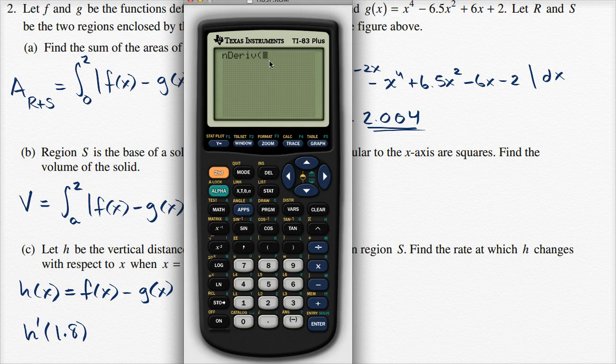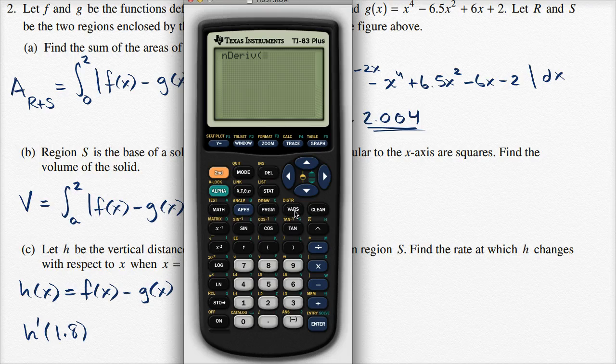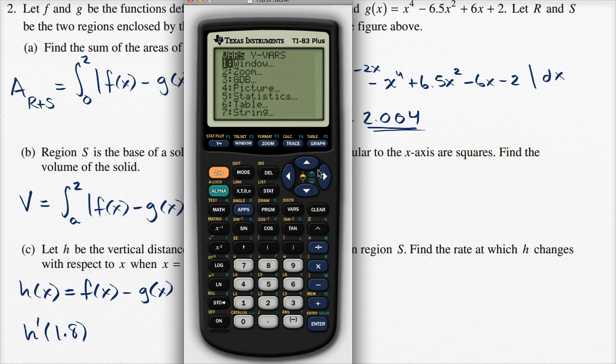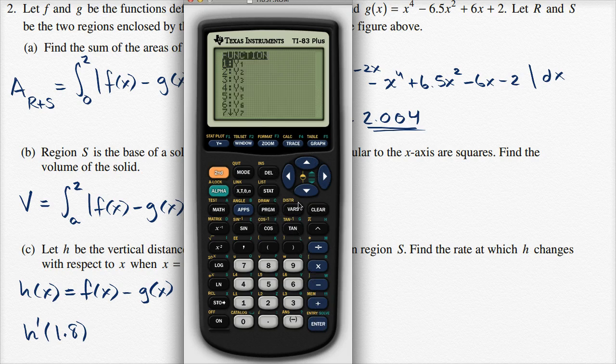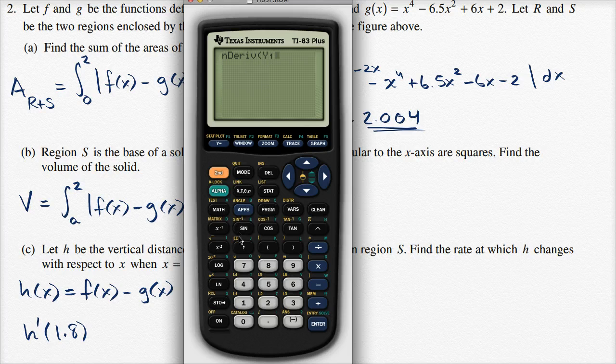And what am I going to take the derivative of? Well, the function y sub 1 that I've already defined in my calculator. I can go to variables, y variables. It's already selected function so I'll just press enter. And I'll select the function y sub 1 that I've already defined. So I'm taking the derivative of y sub 1. I'm taking the derivative with respect to x. And I'm going to evaluate that derivative when x is equal to 1.8.